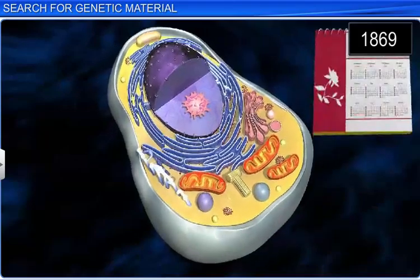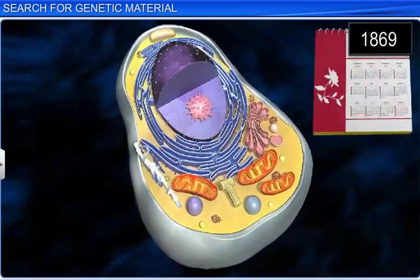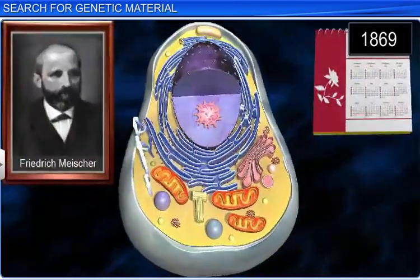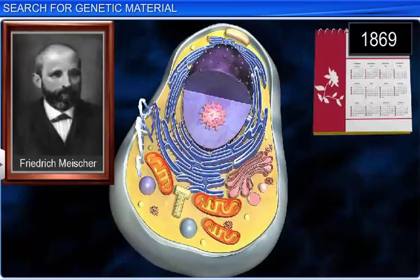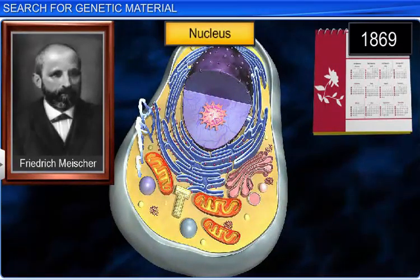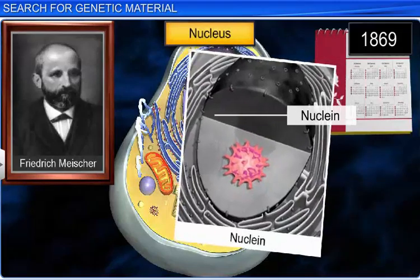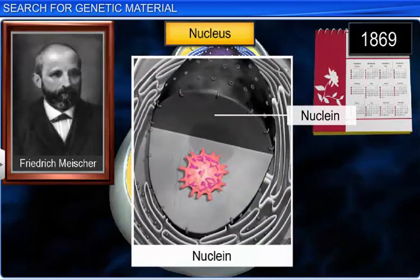In 1869, Friedrich Miescher isolated an acidic material from the nucleus of a cell and called it Nuclein, now known as Nucleic Acids.